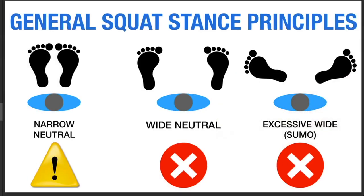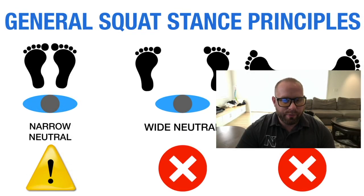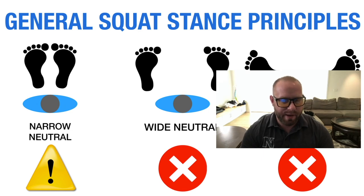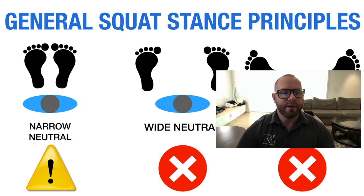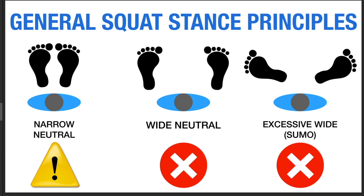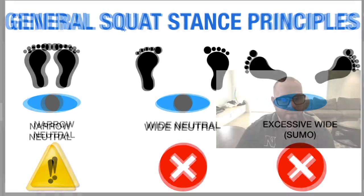Stances to avoid: narrow neutral will limit hip range of motion, causing a butt tuck and low back rounding — it has limited application outside of something like a sissy squat. Wide neutral is also problematic because the thighs are angled out while the feet are straight, creating rotational force at the knee from the tibia-femur relationship. A sumo stance squat essentially misaligns both the hip and knee joints.